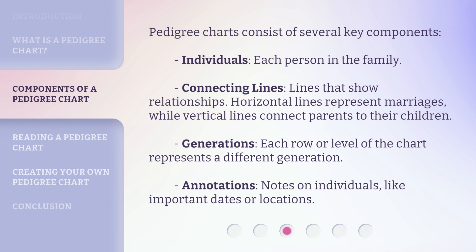Pedigree charts consist of several key components: Individuals — each person in the family. Connecting Lines — lines that show relationships; horizontal lines represent marriages, while vertical lines connect parents to their children. Generations — each row or level of the chart represents a different generation. Annotations — notes on individuals, like important dates or locations.